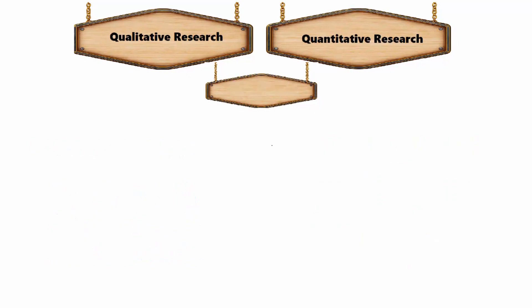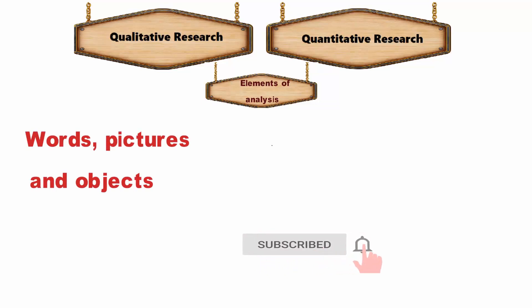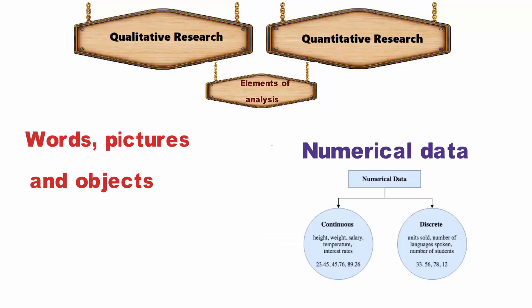Nine, element of analysis: elements used in the analysis of qualitative research are words, pictures, and objects while that of quantitative research is numerical data.